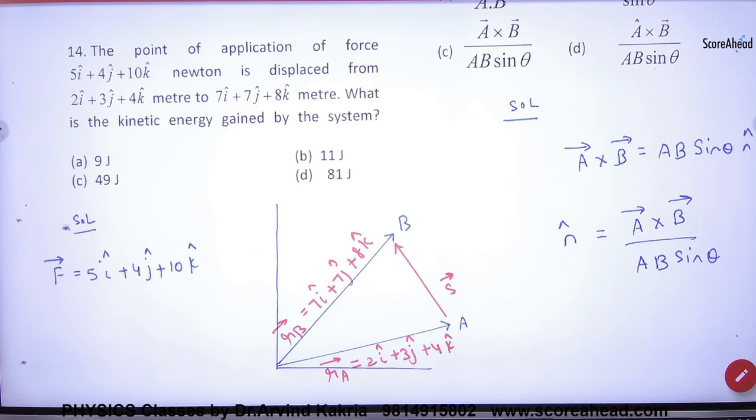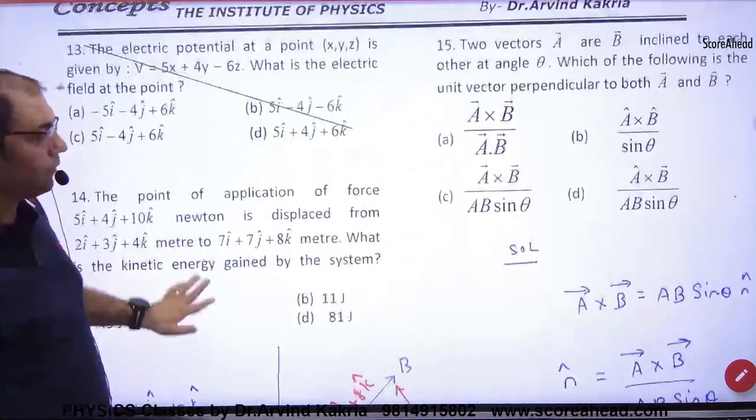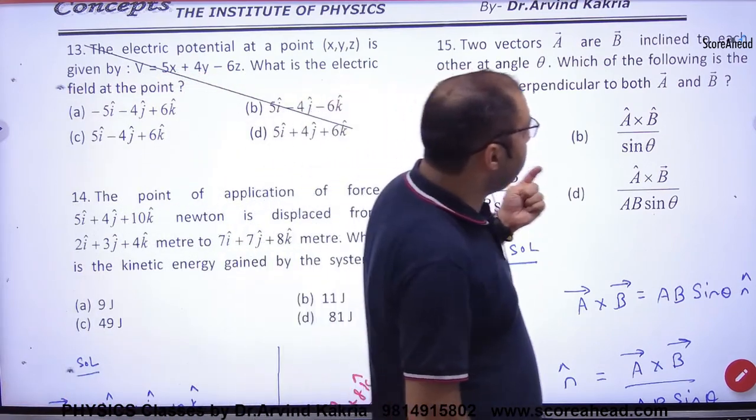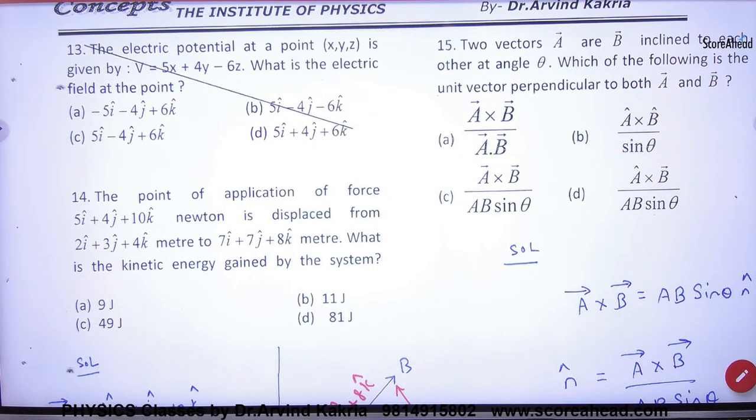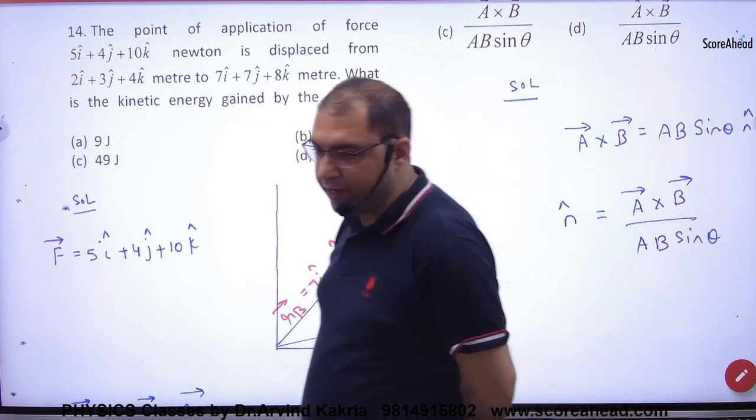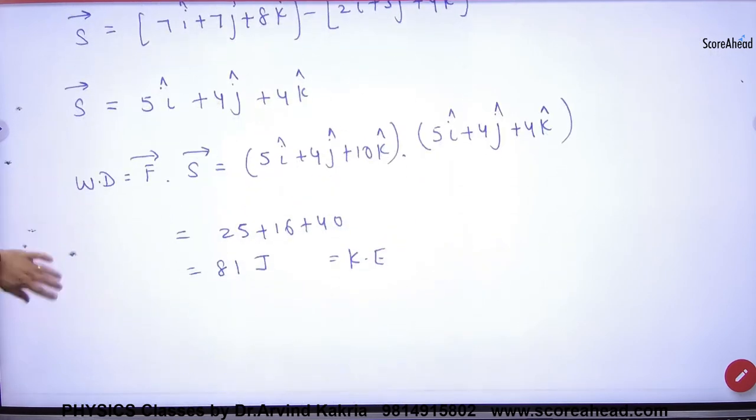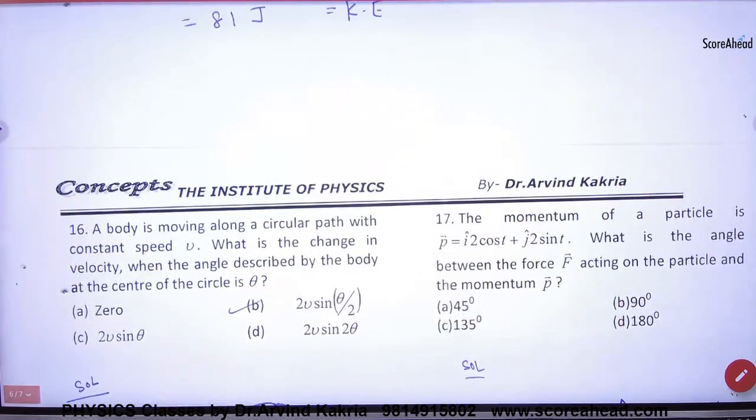Question number 14, question number 15. Two vectors A vector and B vector inclined to each other at an angle of theta. Which of the following is a unit vector perpendicular to both A vector and B vector? Tell me one thing: there are options with cross product. What is A vector cross B vector? A B sin theta into n cap. What is a unit vector? And obviously A vector cross B vector is perpendicular to both. So what is n cap? A vector cross B vector upon AB magnitude. This is asking n cap. n cap is always perpendicular to A vector and B vector.